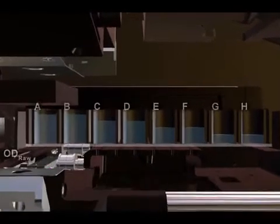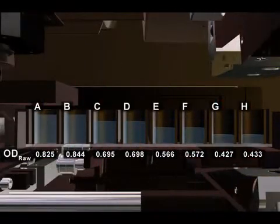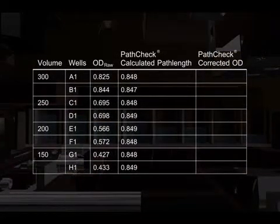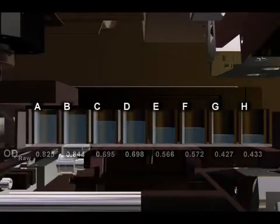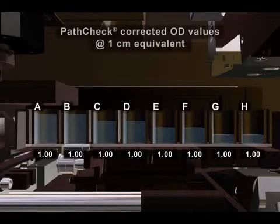In addition to your raw OD value, PathCheck reads the wells at the temperature-independent absorbance point of water to determine the actual path length. This path length is applied to the raw OD values to convert them to the OD value if it were one centimeter. You can correct for differences in volume and get better quality data with this patented feature that is unique to molecular devices readers.